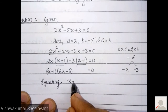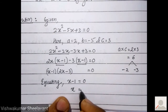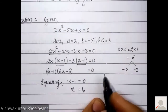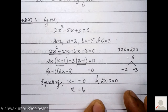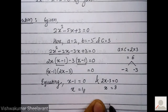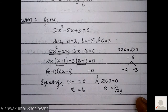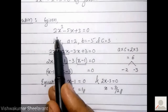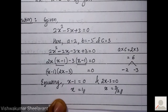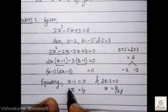Equating x − 1 = 0 gives x = 1. And equating 2x − 3 = 0 gives x = 3/2. Therefore x = 1 and x = 3/2 are the solutions of the given quadratic equation.